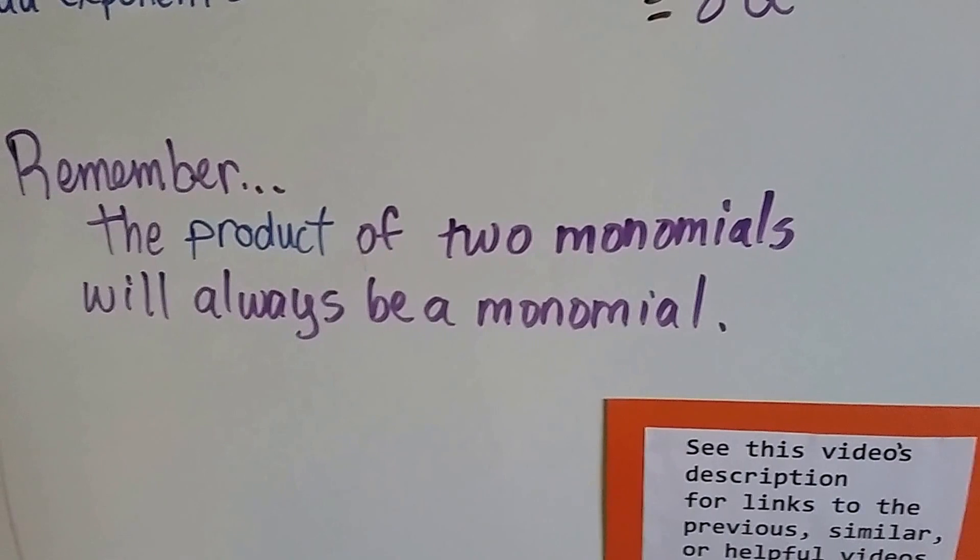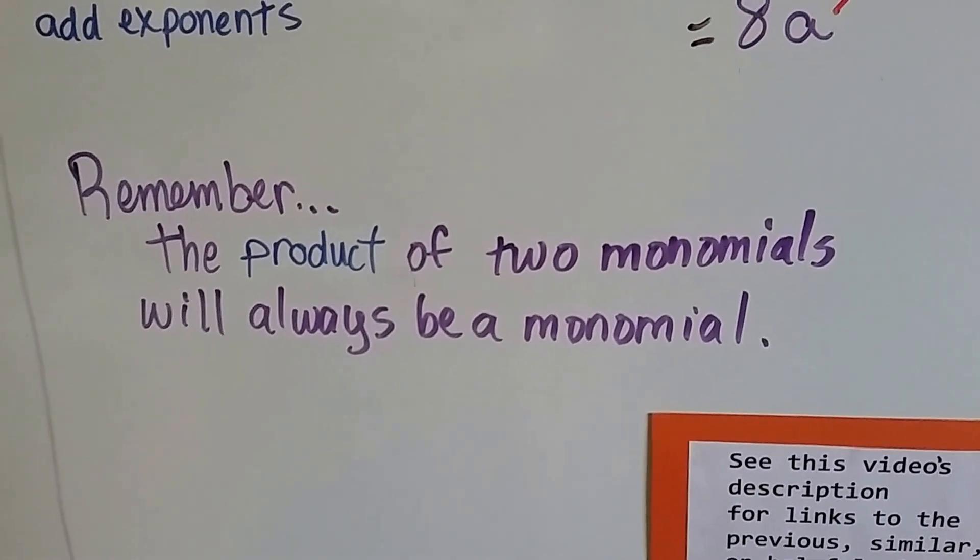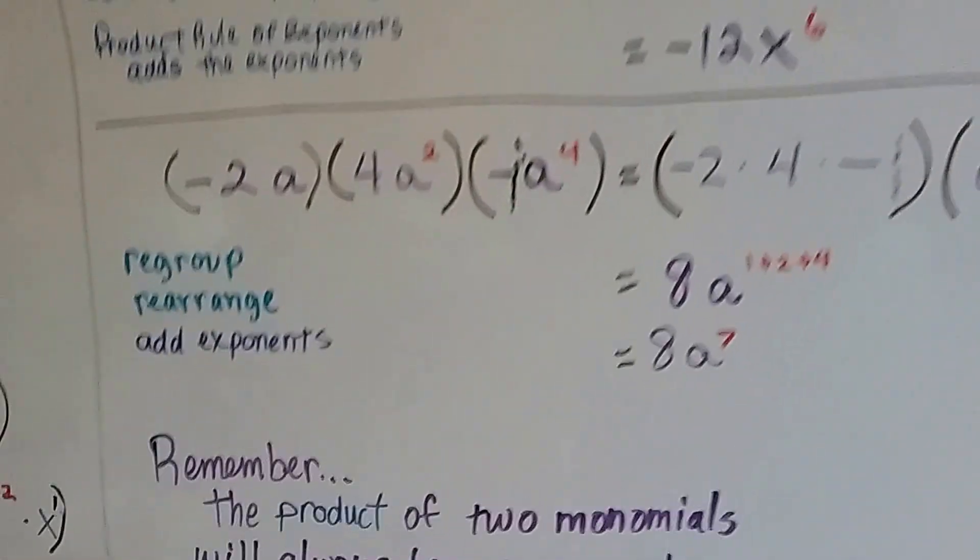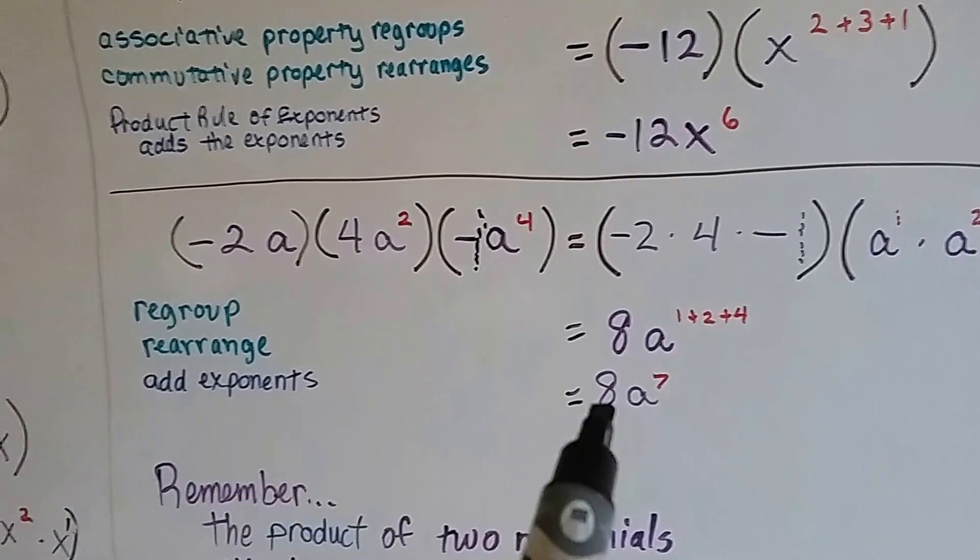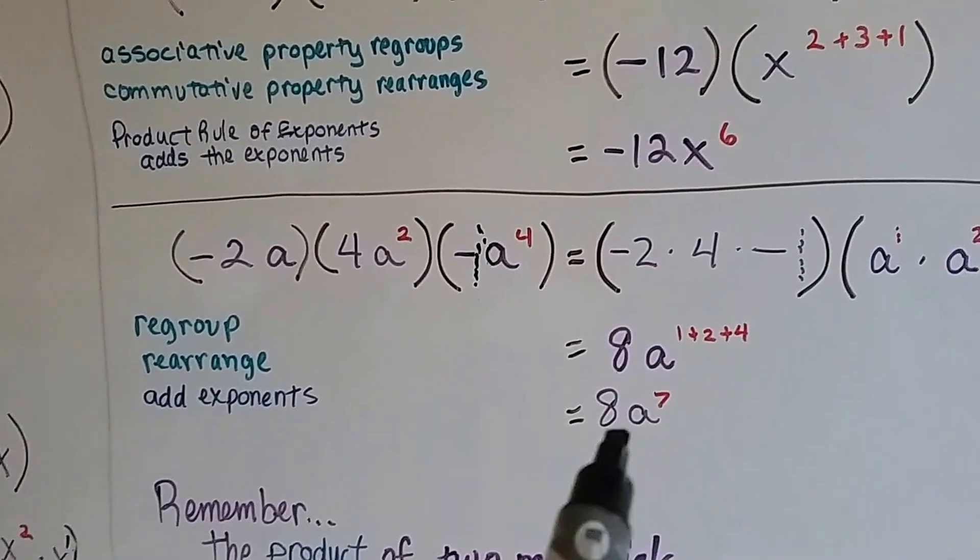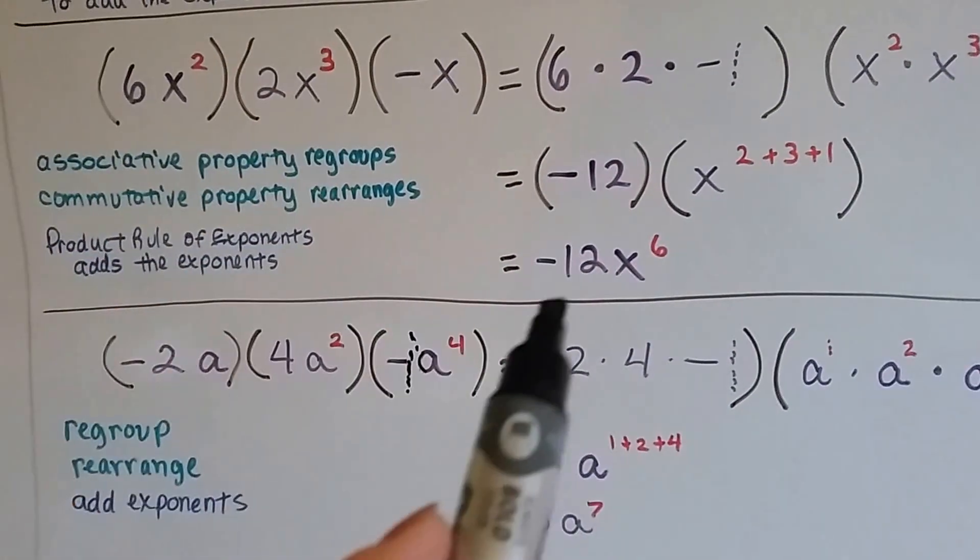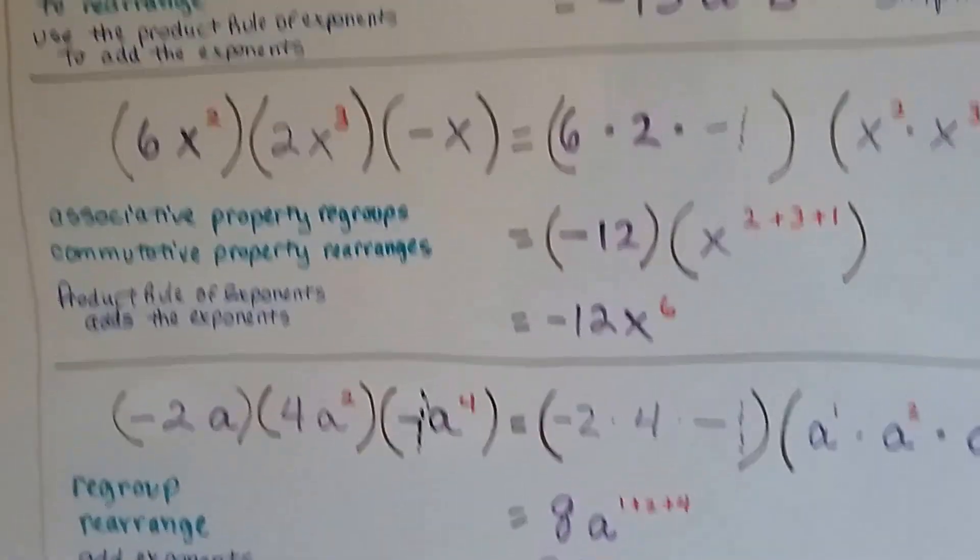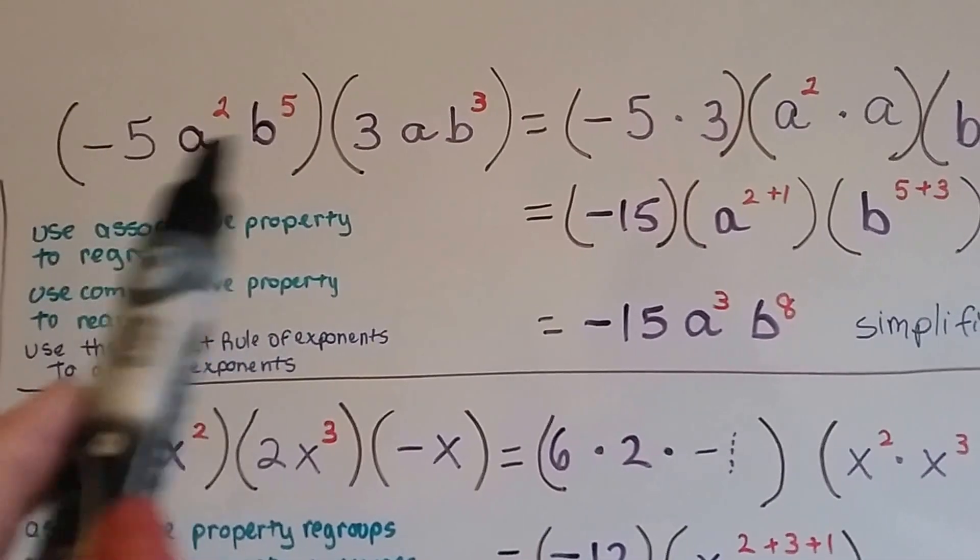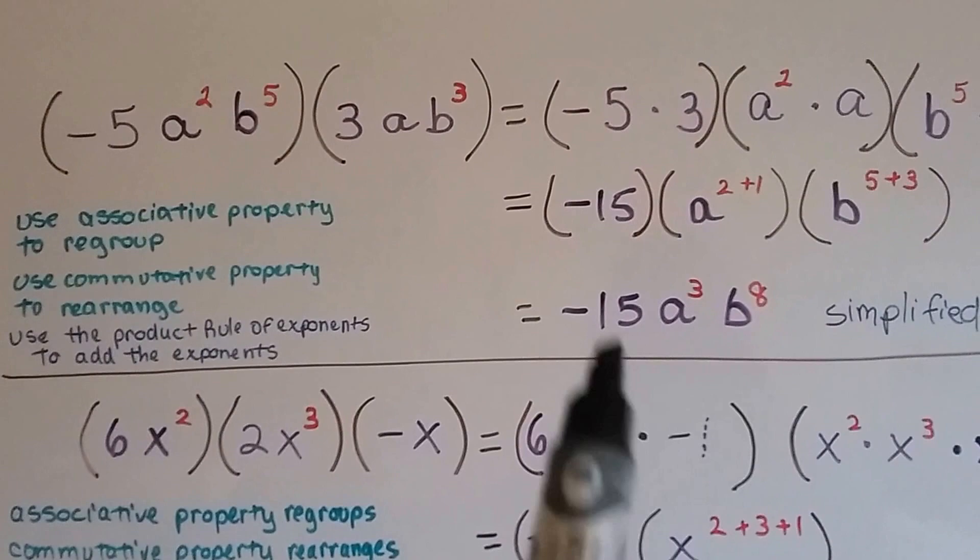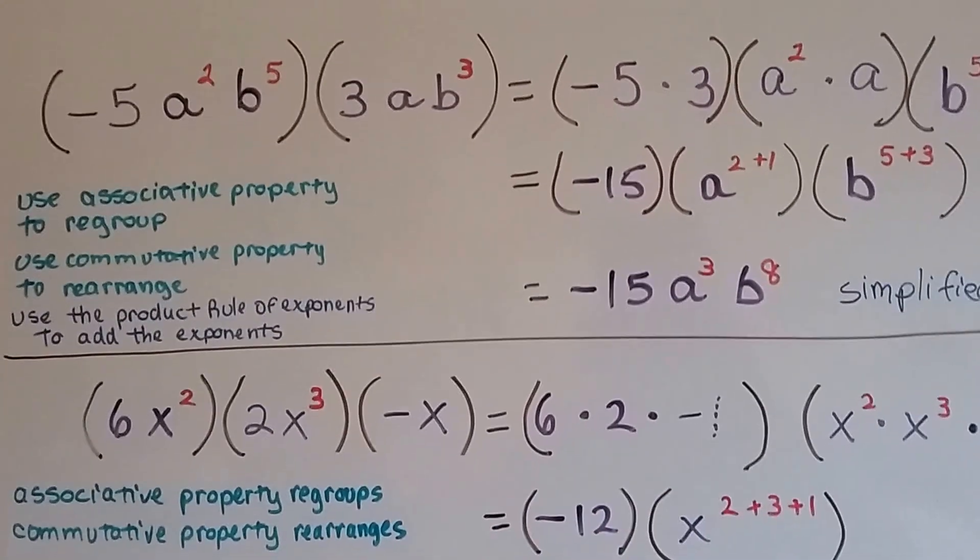So, remember, the product of two monomials will always make another monomial. Here, we had three of them multiplied together, and we made this nice little monomial. We multiplied these three together and made one monomial. We multiplied this big huge one with this one, and we got one big monomial.